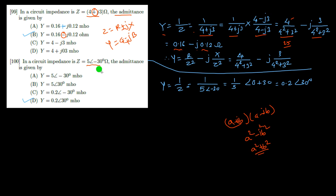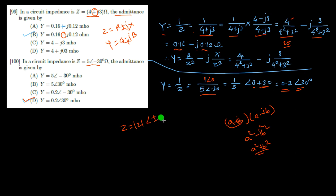When impedance is given in polar form, for example Z = 5∠−30°, then Y = 1/Z = (1/5)∠(0° − (−30°)) = 0.2∠+30°. So in polar form the magnitude inverts and the angle sign is reversed. If Z = |Z|∠±φ, then Y = (1/|Z|)∠∓φ — the angle gets reversed. Remember this concept.